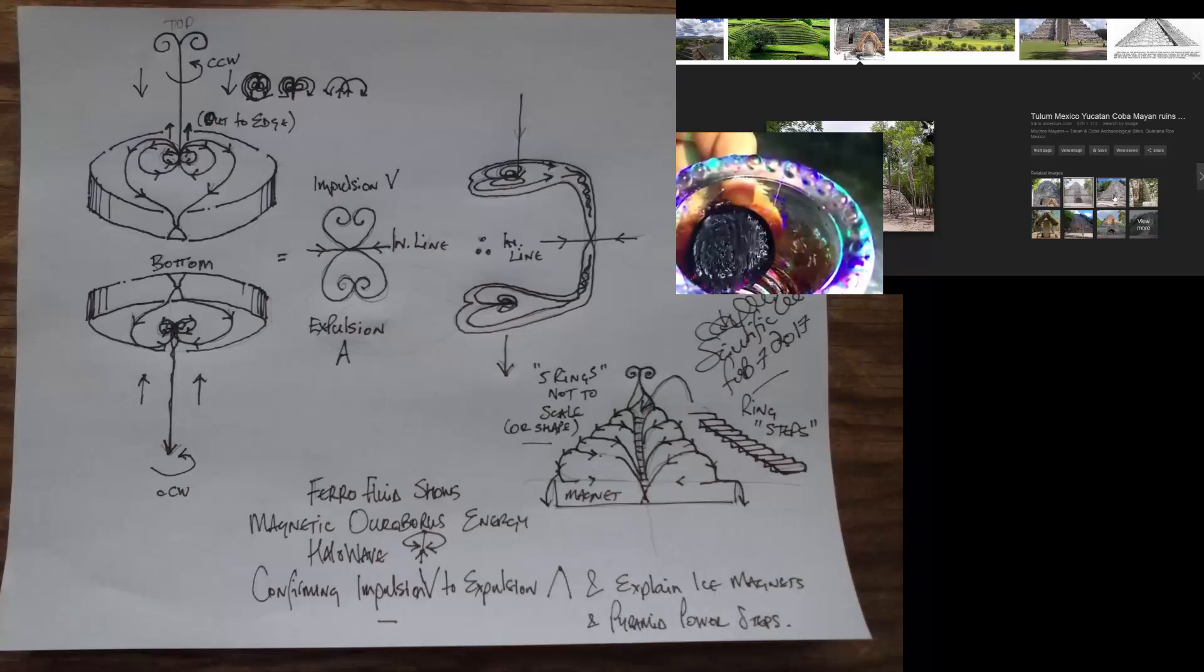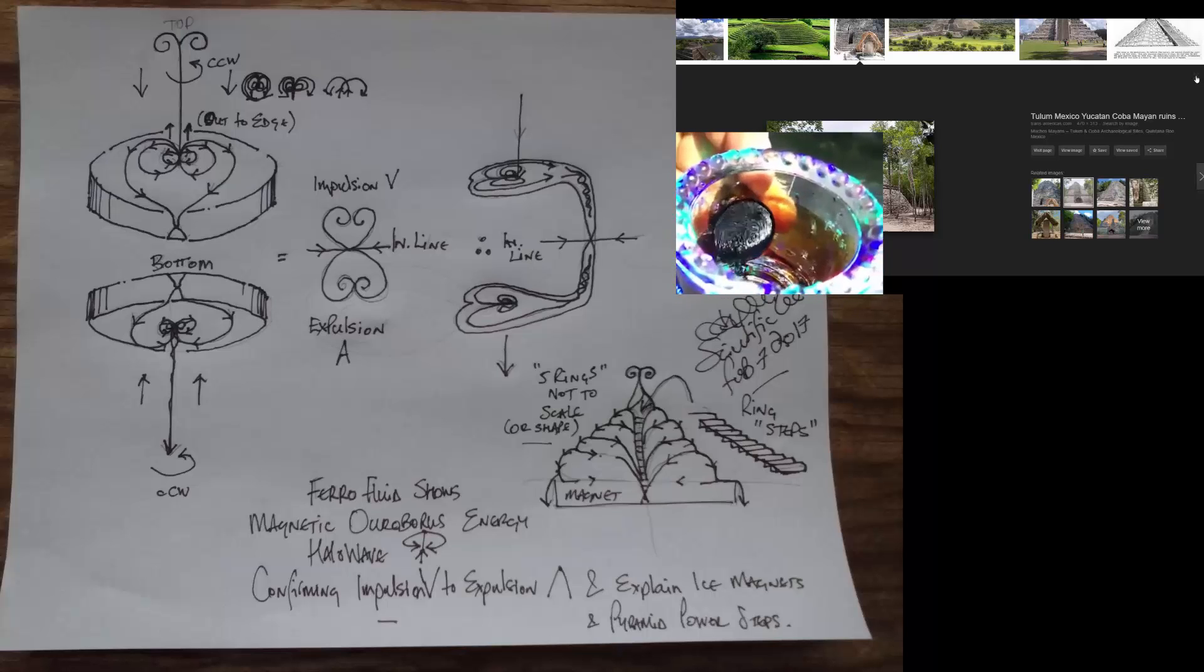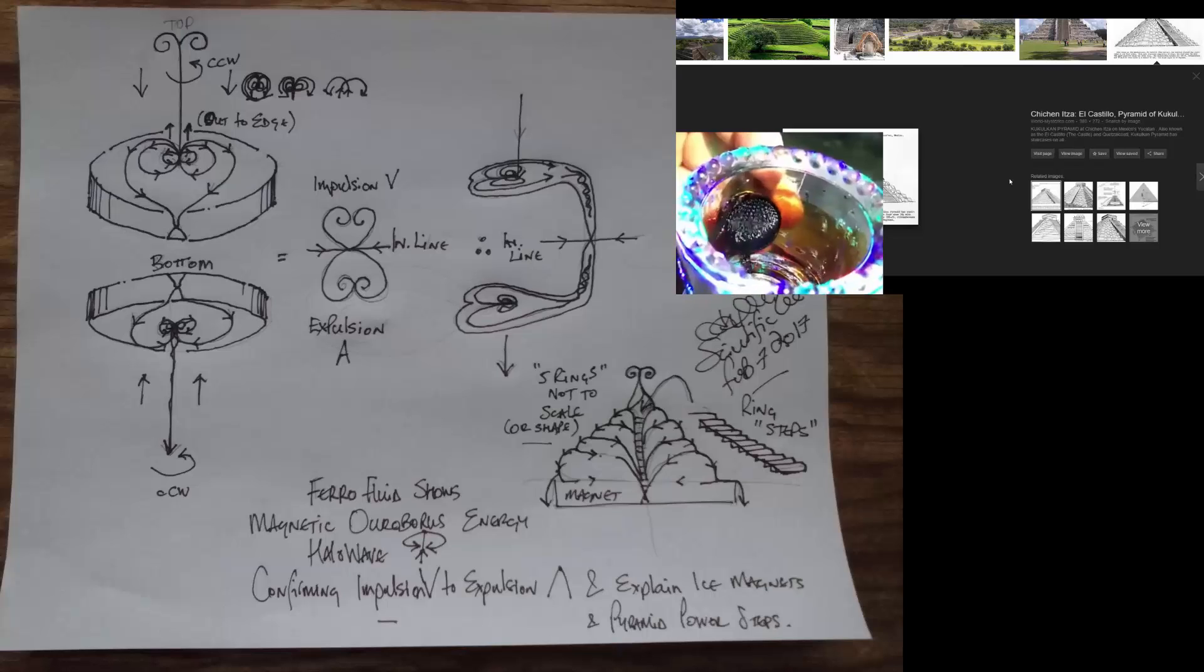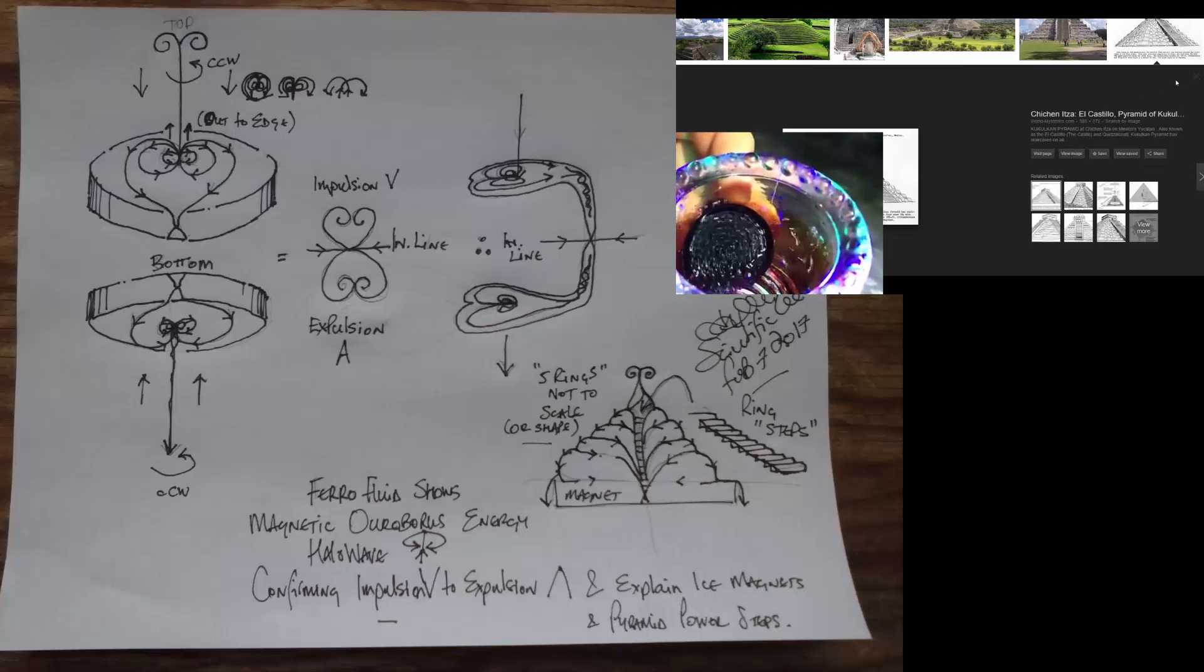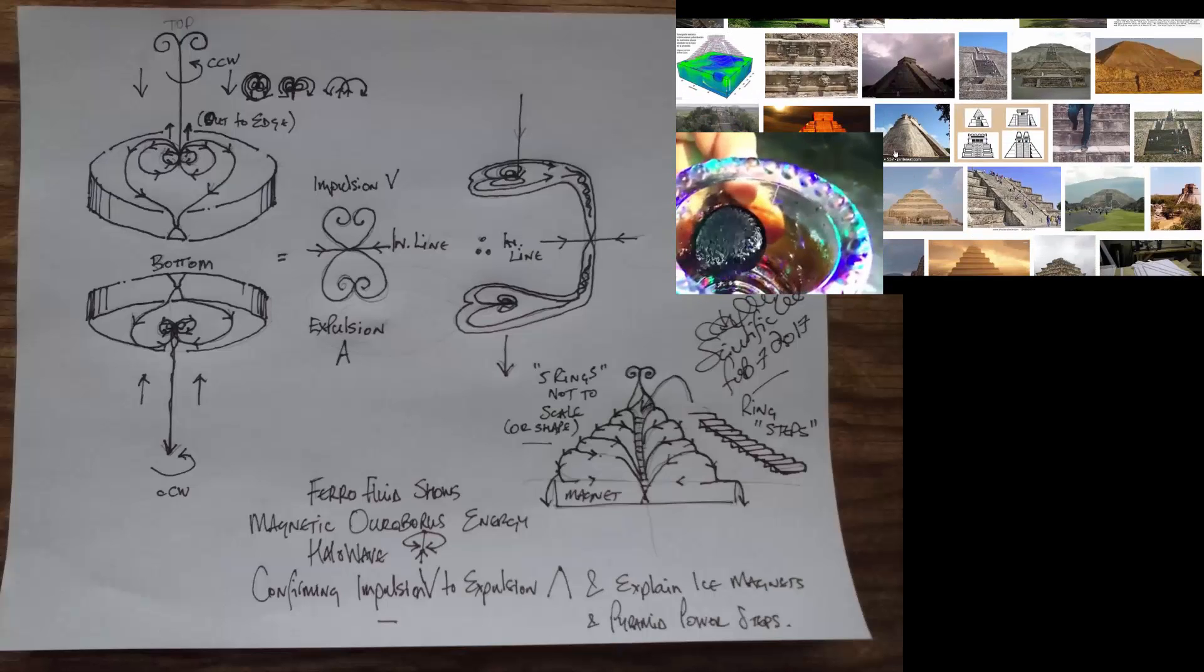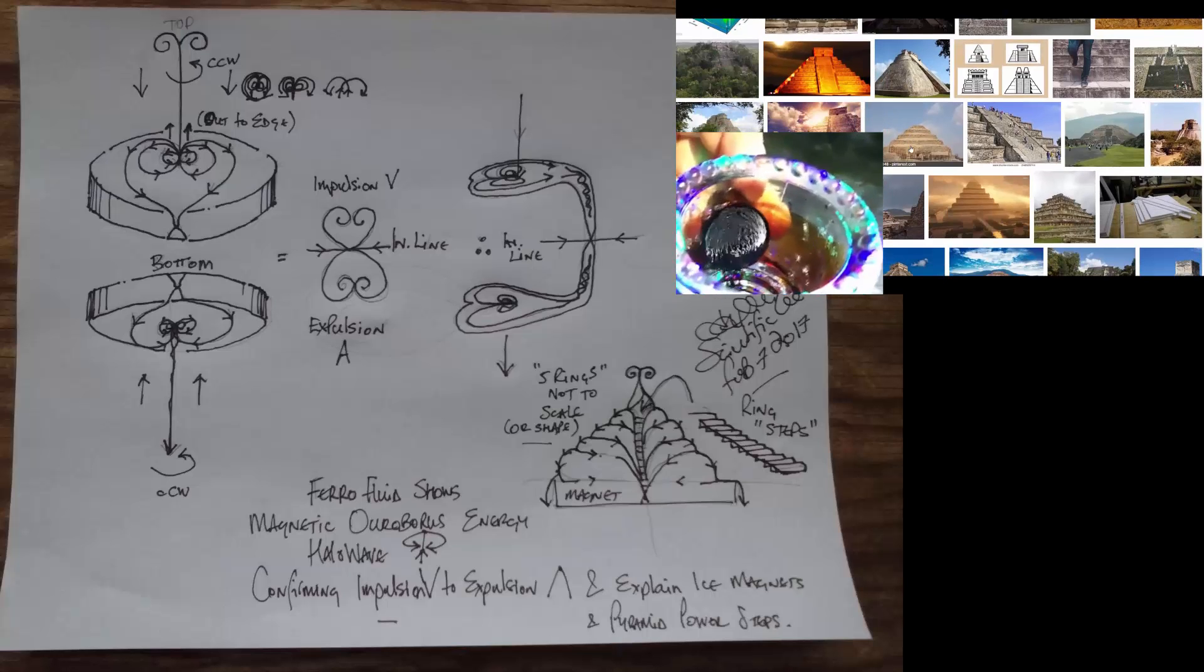but it also explains ice magnets and pyramid power steps. If you look at the video in the top right-hand corner, we have a rushing in to the tree of life before it forms a swirl on top of the ferrofluid.